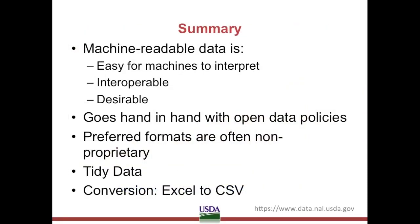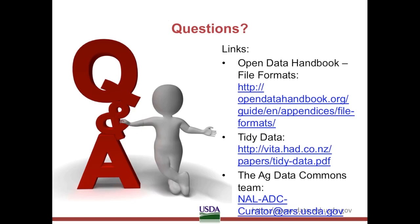In conclusion, machine-readable data is highly desired because of its ability to be more easily interpreted by machines and interoperable across many platforms and applications. Machine-readable formats go hand in hand with open data policies and are in many cases required as the final format for U.S. federal data. Preferred formats are generally non-proprietary, and making sure your data is tidy and well-organized will help you maintain machine-readable results. Finally, we walked through a sample data format conversion from Excel to CSV and reviewed how to put these principles to use. These links to the Open Data Handbook and the tidy data paper are included for review, along with the email for the AgData Commons Curator inbox if you have any questions for our team.